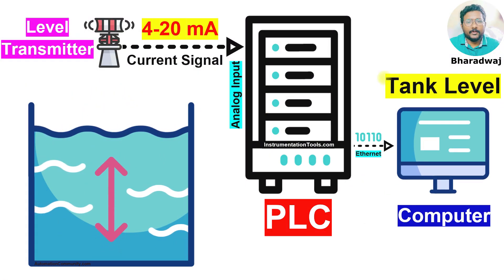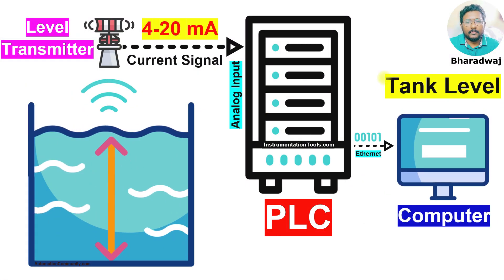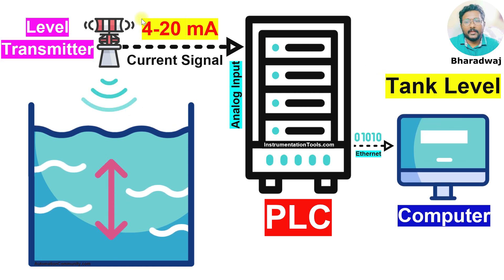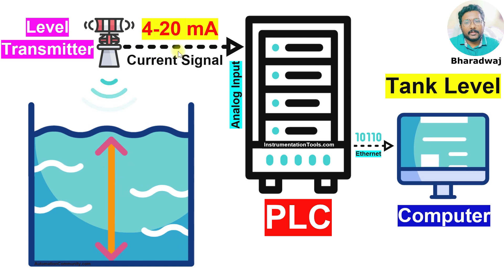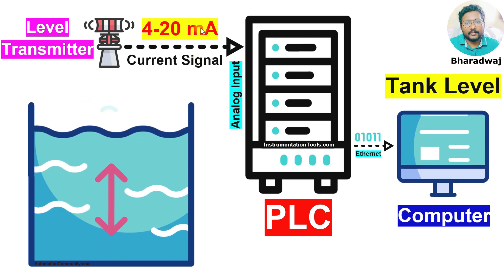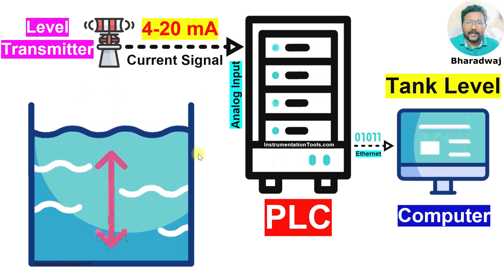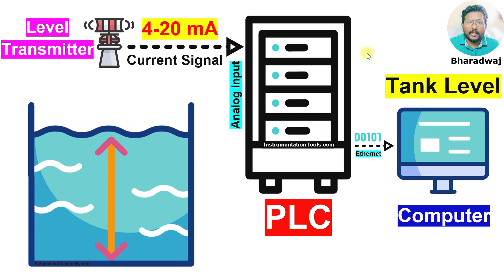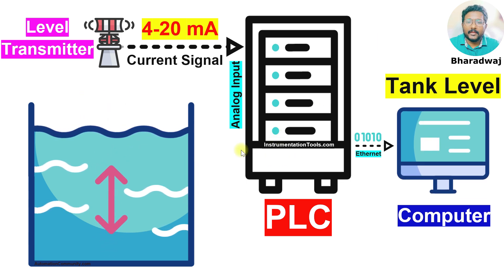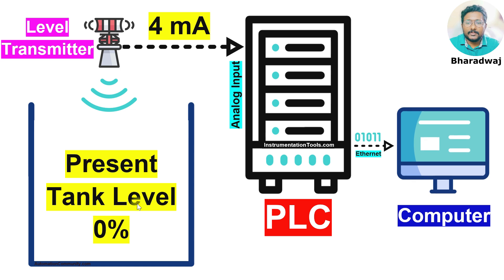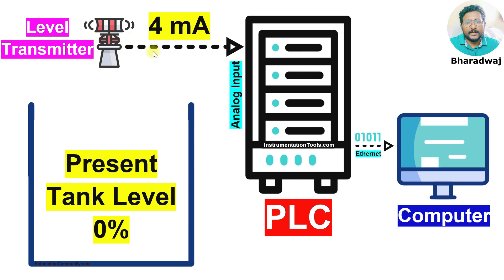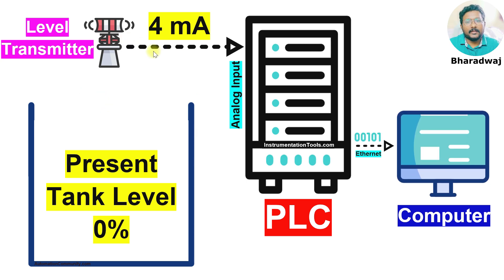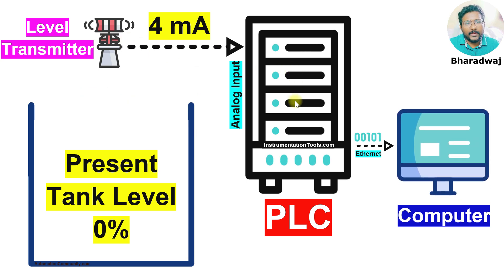In this video we will discuss the level transmitter output current signal values with respect to the tank level. Let's suppose the tank level is 0% and the level transmitter will send a 0% signal to the PLC.